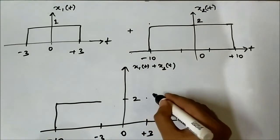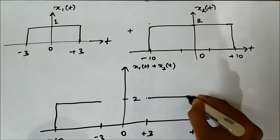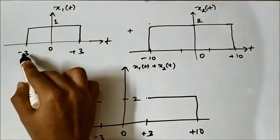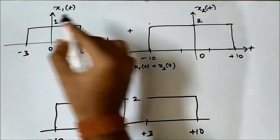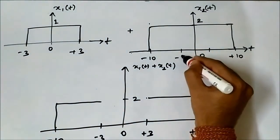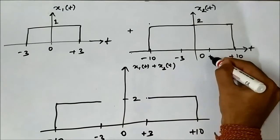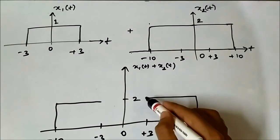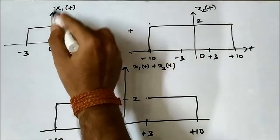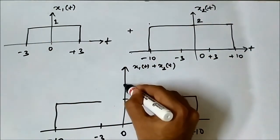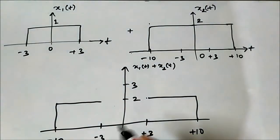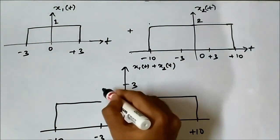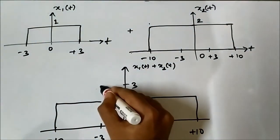Now in between minus 3 to plus 3, x1(t) is 1 and x2(t) is 2. So the values get added up: 1 plus 2 equals 3. So in between minus 3 to plus 3 the result is 3.